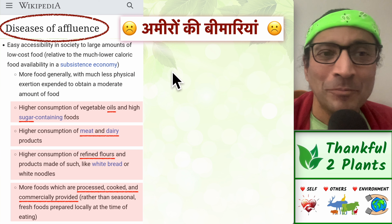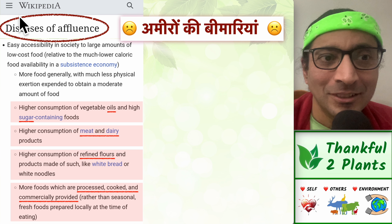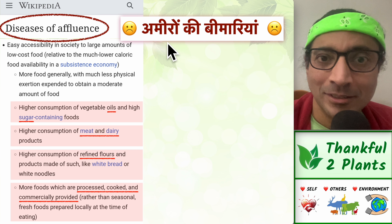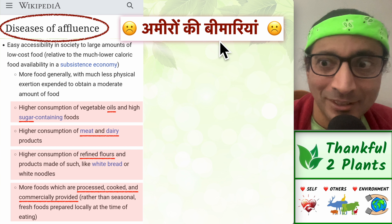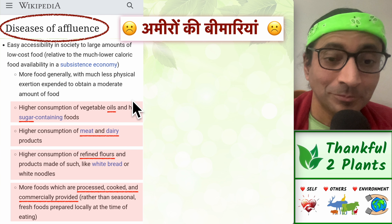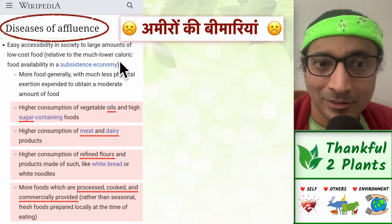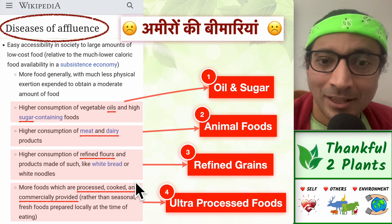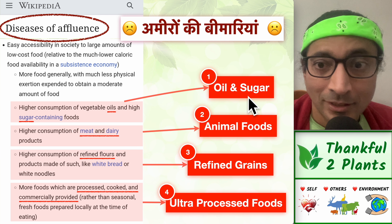Let's see. There is a Wikipedia article called Diseases of Affluence. In North India, we might choose to call it 'Ameeron ki Bimariya.' These are the dietary factors this article has identified. Let's simplify it: higher consumption of oil and sugar.